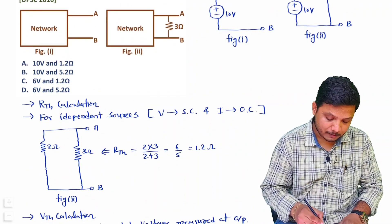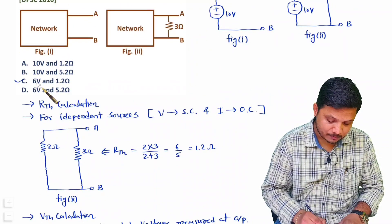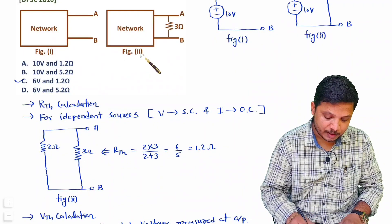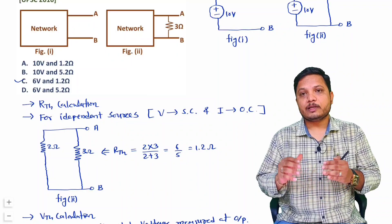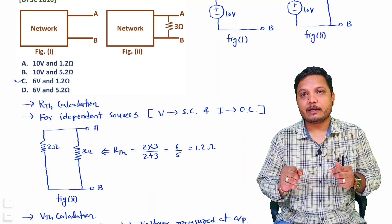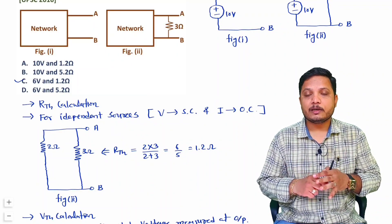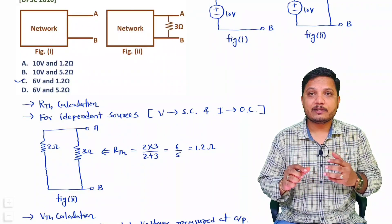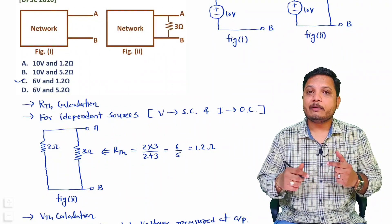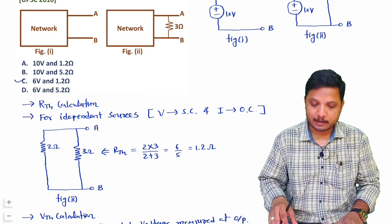We now have RTH = 1.2 ohms and VTH = 6 volts. Our answer for Figure 2 is 6 volts and 1.2 ohms. This is how we simply identify the calculation for the independent source case. Now I will give you a very tricky question involving a dependent source, where we will identify the Thevenin's equivalent.